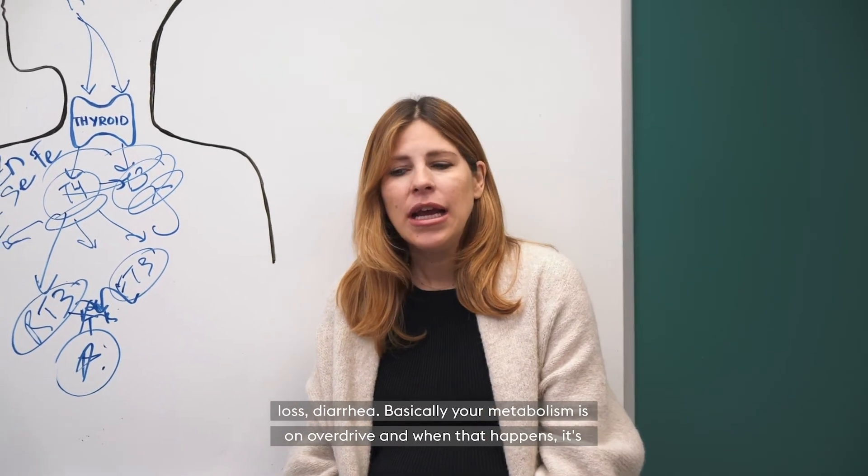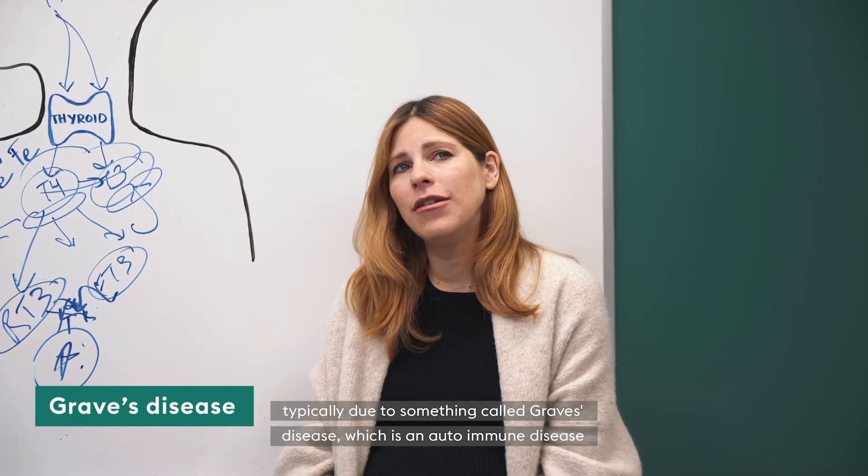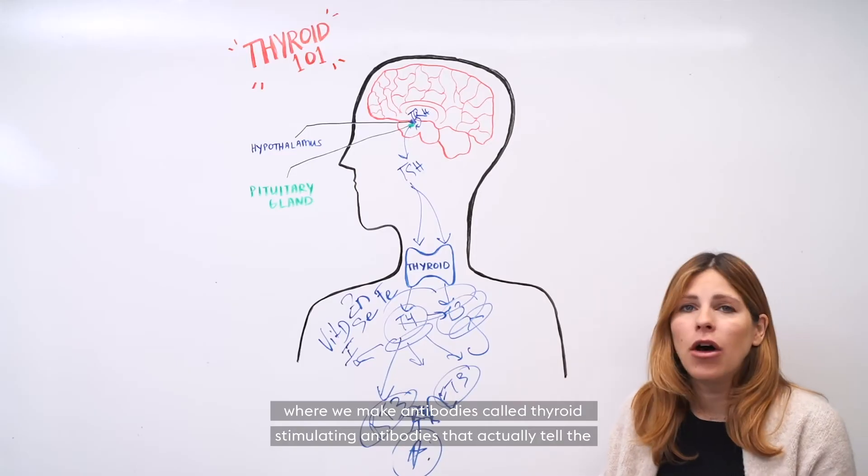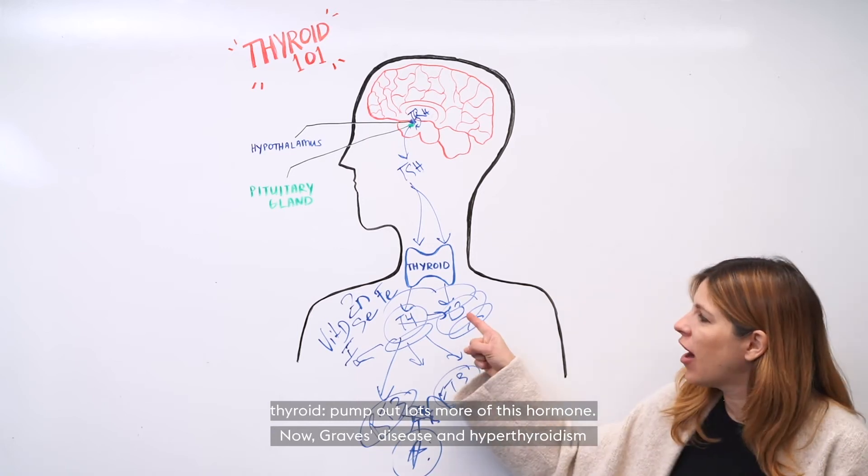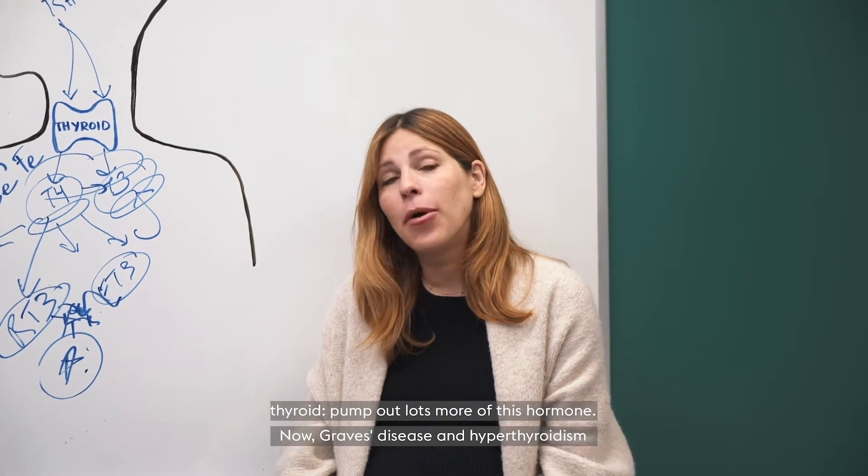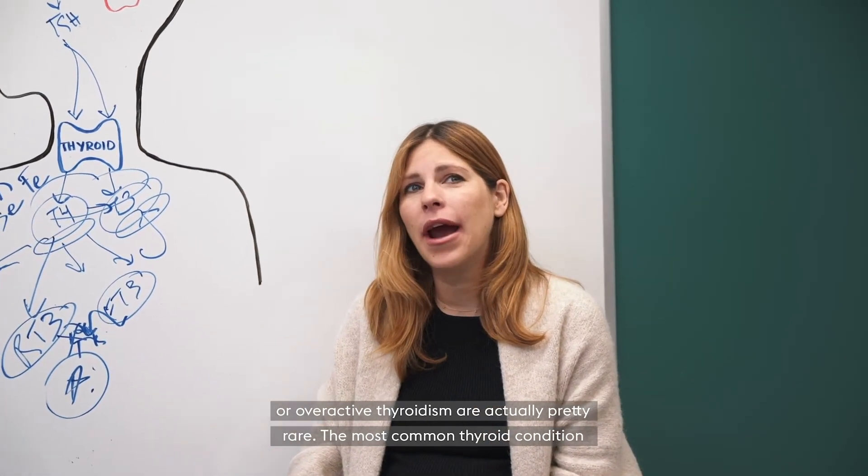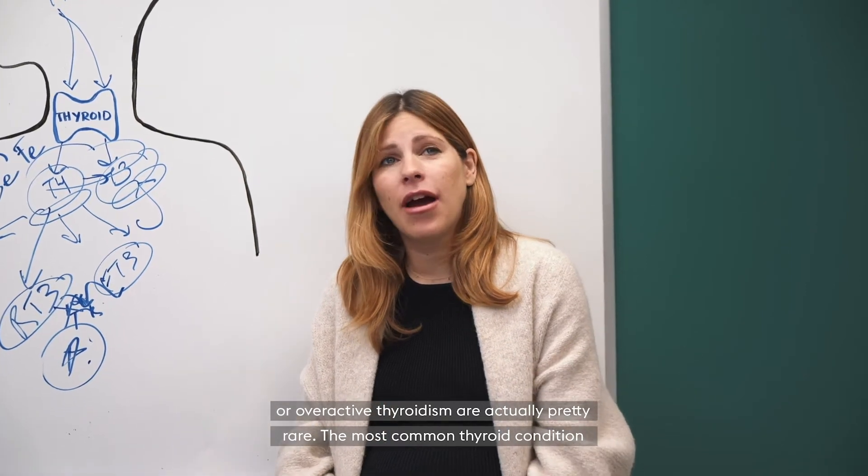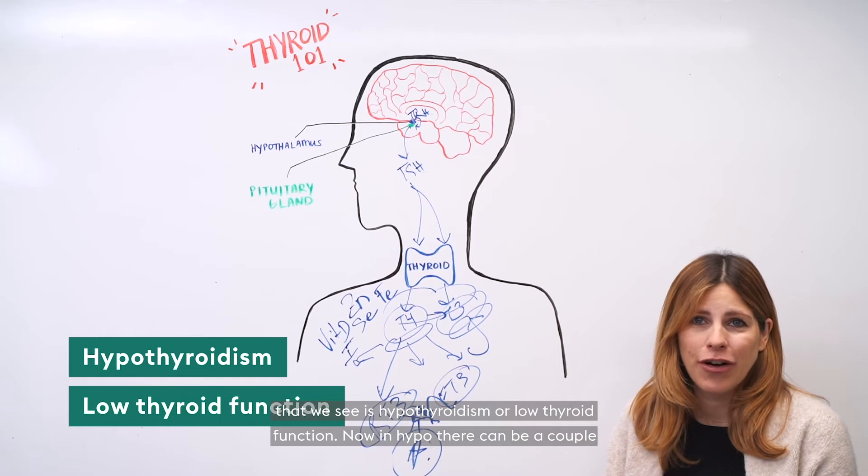And when that happens, it's typically due to something called Graves' disease, which is an autoimmune disease, where we make antibodies called thyroid stimulating antibodies that actually tell the thyroid to pump out lots more of this hormone. Now Graves' disease and hyperthyroidism are actually pretty rare. The most common thyroid condition that we see is hypothyroidism or low thyroid function.